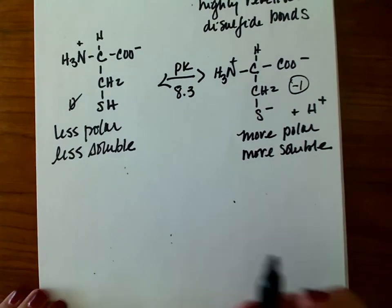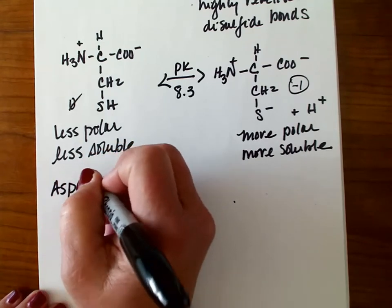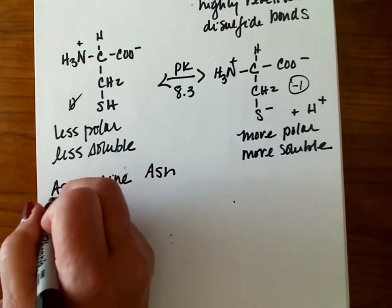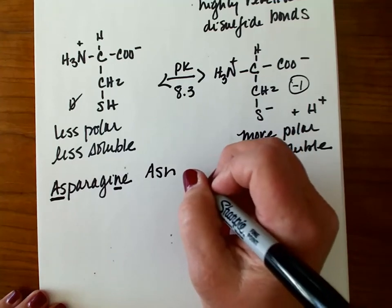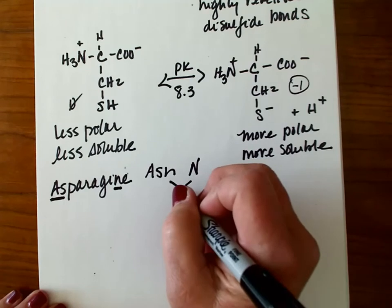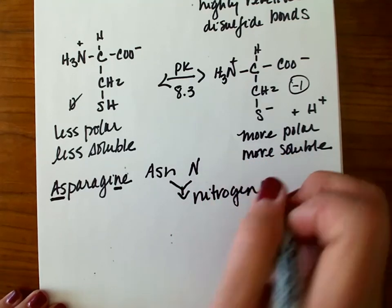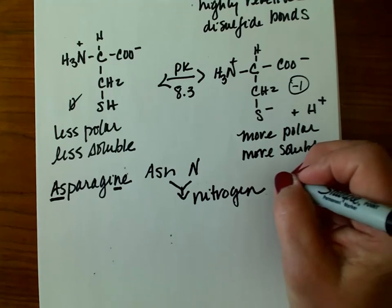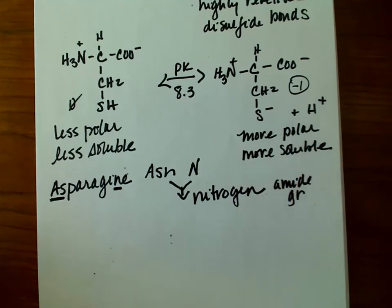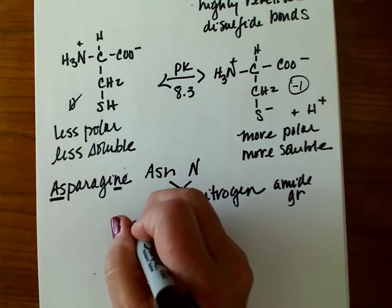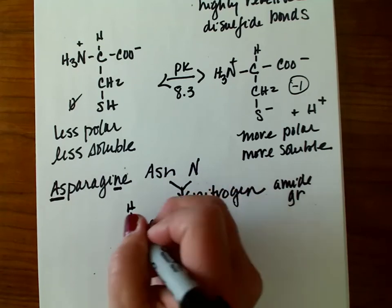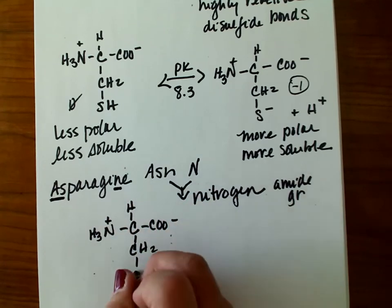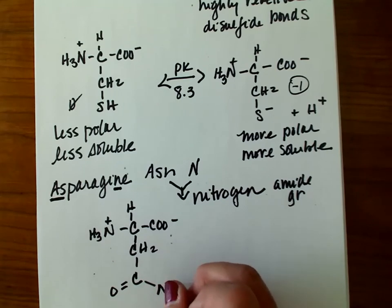Next we're going to look at asparagine — ASN, N. It has an amide group that does not ionize. So we have a methylene and then our amide group on the side chain.